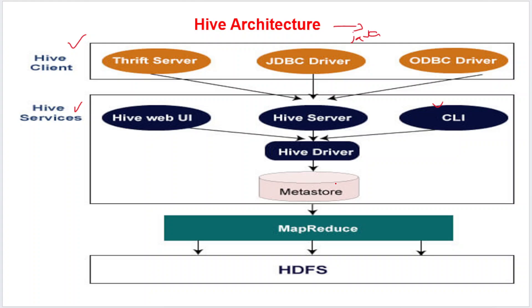The Hive Metastore is a central repository that stores all structured information of various tables and partitions in the warehouse — all table-related information, partitions, serializers and deserializers for reading and writing data, and the corresponding HDFS files. Finally, the results from MapReduce execution can be stored back in HDFS. This is the entire architecture of Hive.